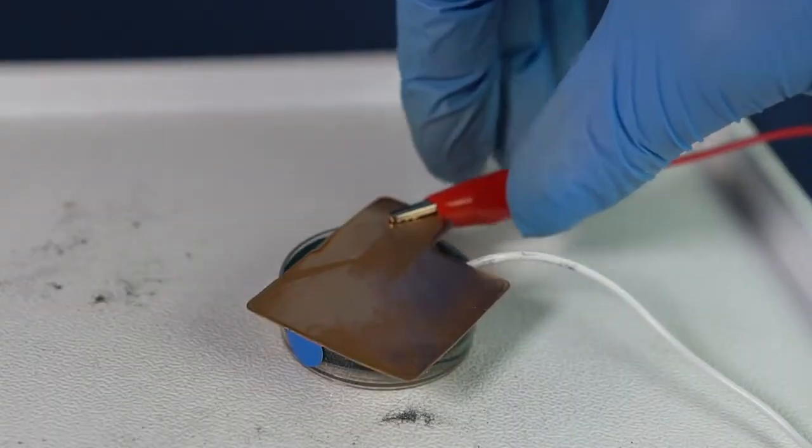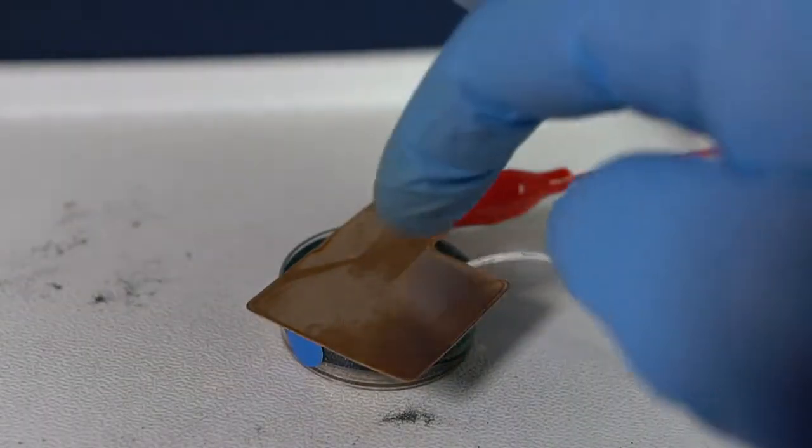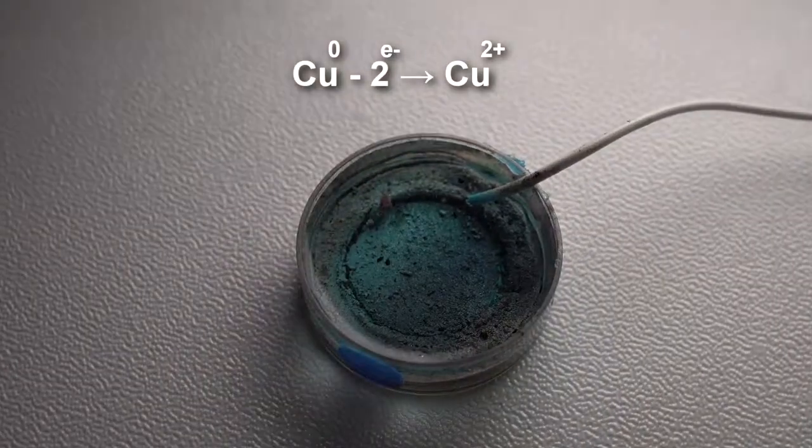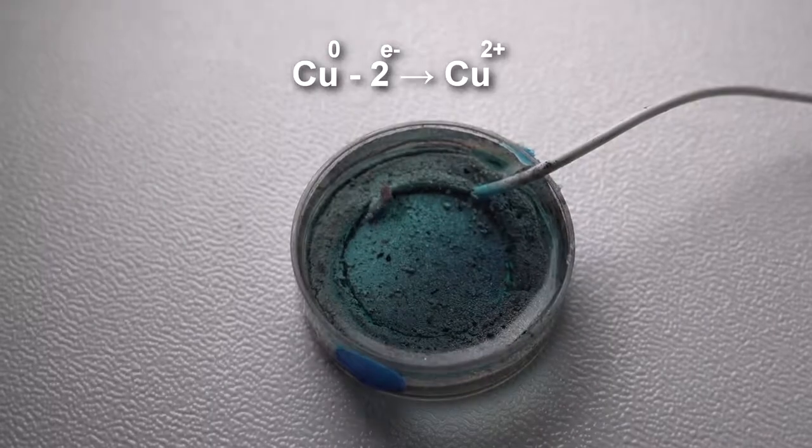The part with electron shortage will be the copper plate in this experiment. Therefore, a reverse reaction happens on the copper plate. Copper atoms lose two electrons, turning into copper ions, and get into the solution.